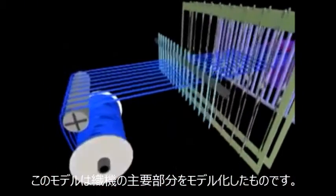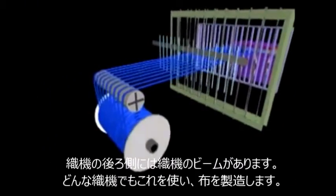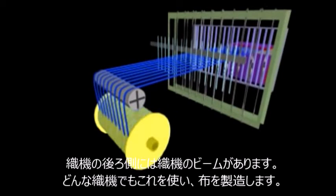The illustration shows the major components of the weaving machine. At the back of the loom, we can see a loom beam that contains all the warp yarns needed to manufacture the desired fabric.